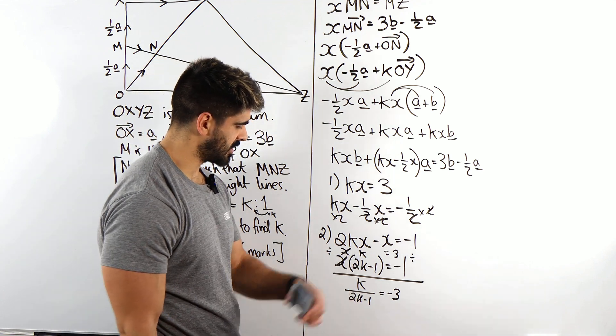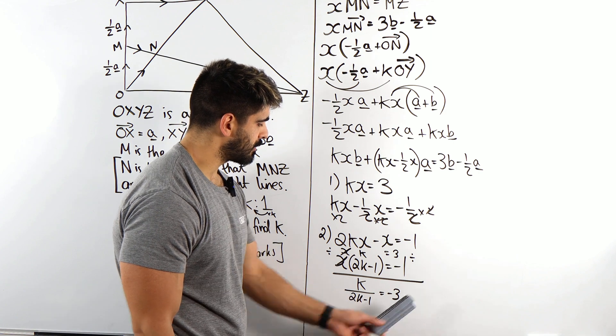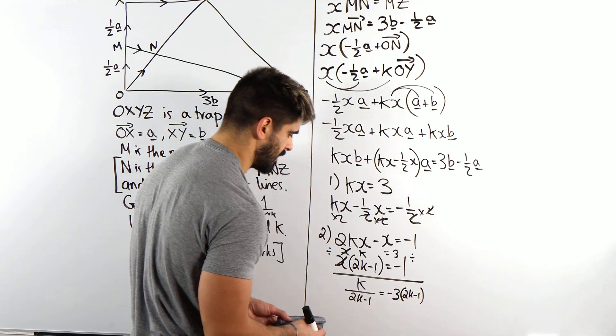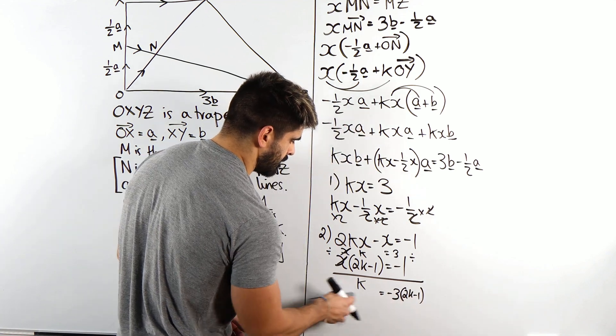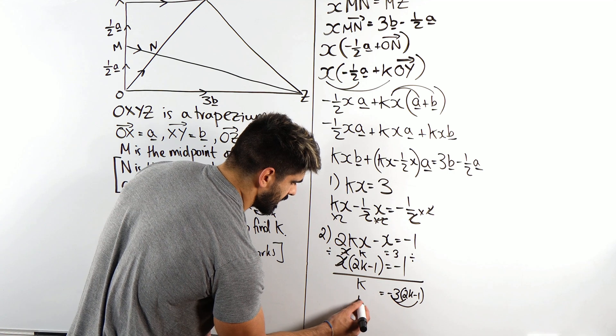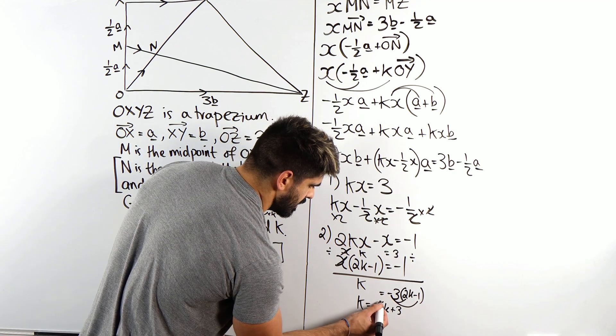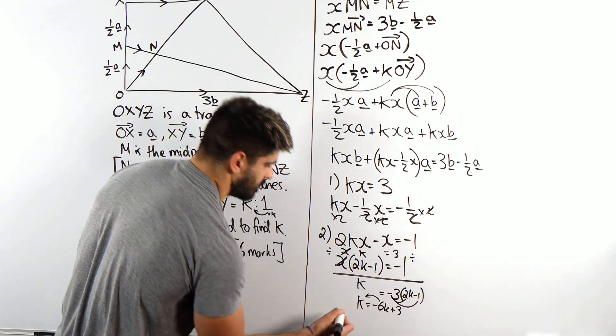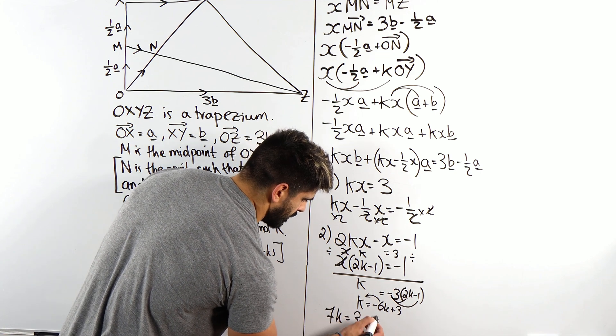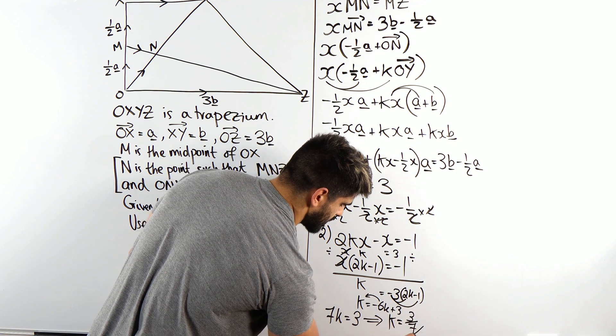So now we've got an equation in K and we just need to solve. So this says divide by 2K minus 1. We're going to multiply through by that. So it becomes 2K minus 1 over here. And then we just need to expand that. So we get minus 6 plus 3. So we get K is minus 6K plus 3. Bring the 6K over by adding it. We get 7K is 3. Then we divide by 7 on both sides. K is 3 7ths. And that is our final answer for 6 marks.